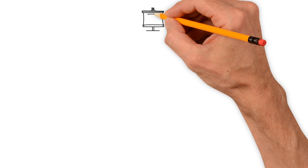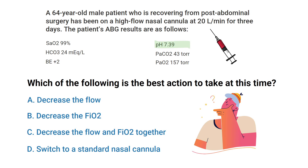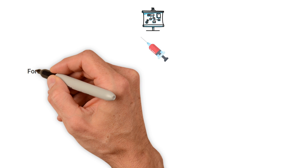Let's break it down. The first thing you need to do is interpret the patient's ABG results. We can see that the acid-base status is normal because the pH, CO2, bicarb, and base excess are all within normal ranges. However, the PaO2 is increased, so this tells us that we need to decrease this value, and we can do so by decreasing the FiO2 setting.